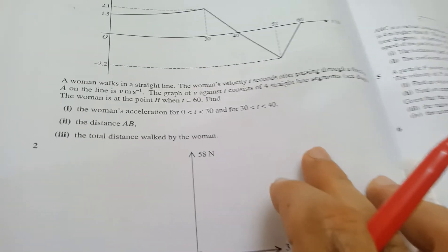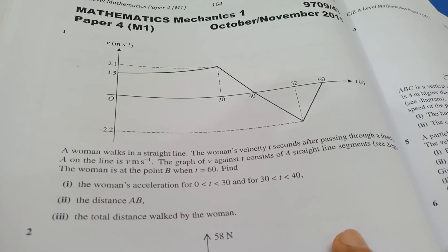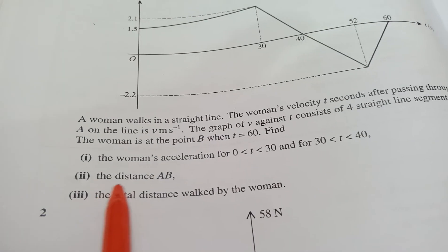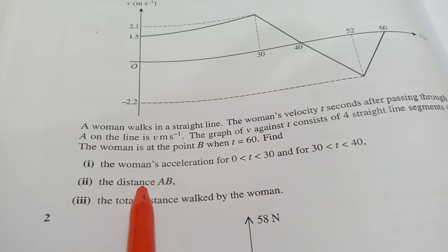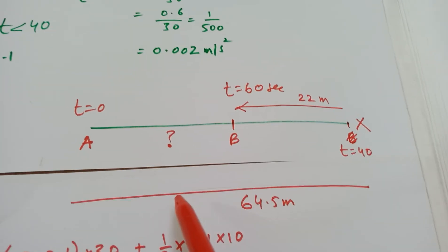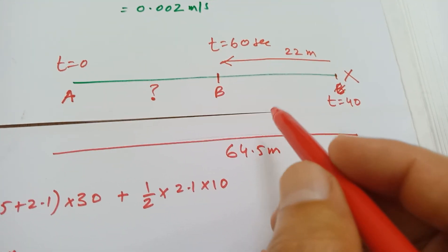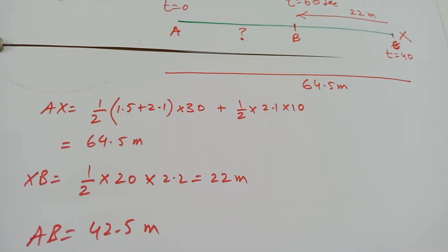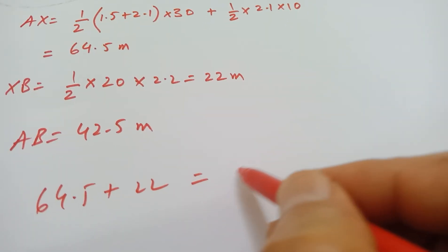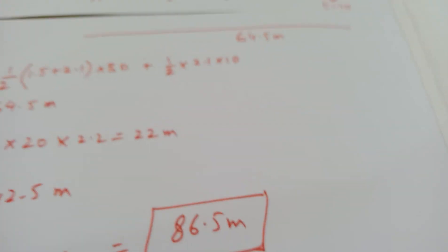The last part asks for the total distance walked by the woman. This is a good question for learning the difference between distance and displacement. The distance AB (42.5 m) is essentially the displacement, but the total distance is found by adding the two legs: the woman went from A to X and then from X to B. So the total distance is 64.5 + 22 = 86.5 metres.